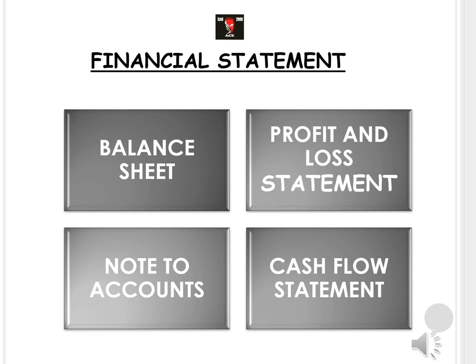Similar things happen in accounts. Since a company or firm has different departments and different types of transactions, in order to understand which transactions are favorable or unfavorable, which department is performing poorly or better than the previous year, or to make comparisons between two companies, we need a report. In technical accounting terms, that report is called a financial statement. Going through these documents helps us understand the performance of the company over a given period of time. These statements are prepared every year according to the accounting concepts we studied in Class 11.